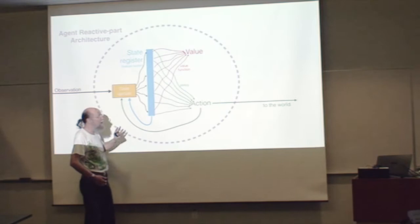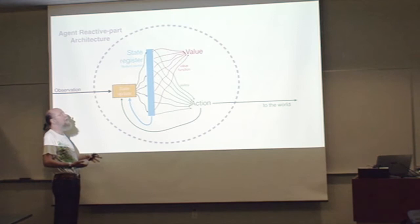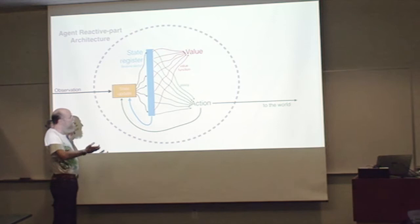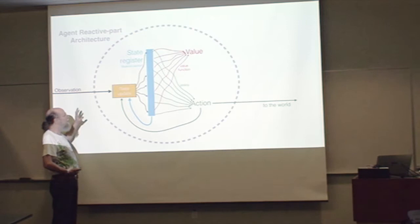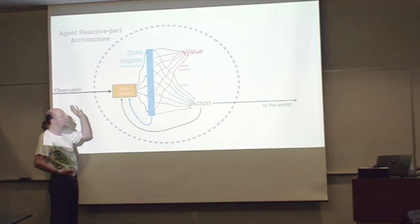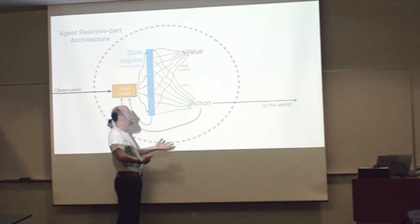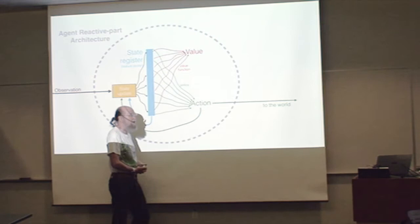These things I'm showing you here constitute the reactive part. Maybe there could also be some other predictions about miscellaneous things in addition to the value function, which is a prediction of reward. Roughly speaking, these are all the things that have to be done fast. You've got to update your state, take an action fast, and you have to learn at that speed as well.